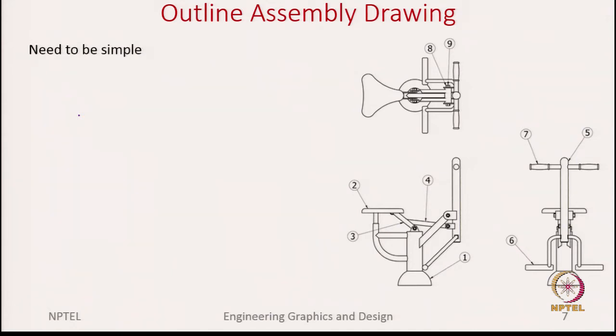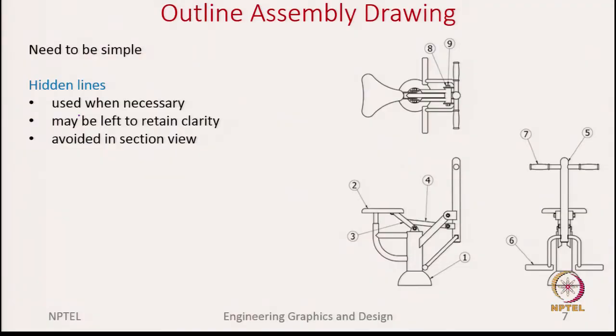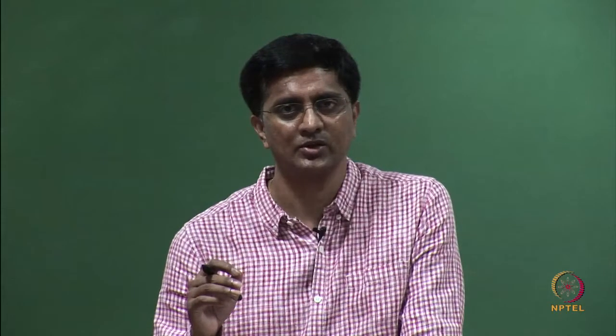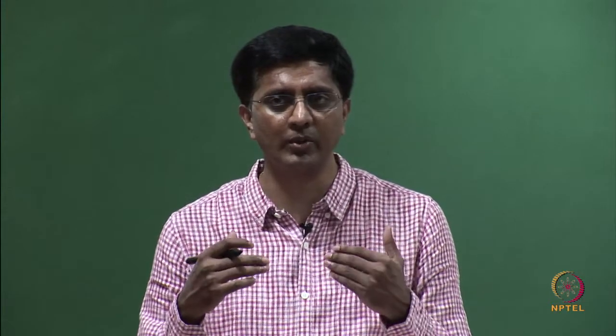Whenever we make assembly drawings we need to make sure the drawing is simple and not complex. We do this by following a few practices. For hidden lines, we can use them when necessary, but they can also be avoided — especially in section drawings, because in a section drawing you already have hatchings to show the different parts, and we do not want to complicate the drawing by including hidden lines.